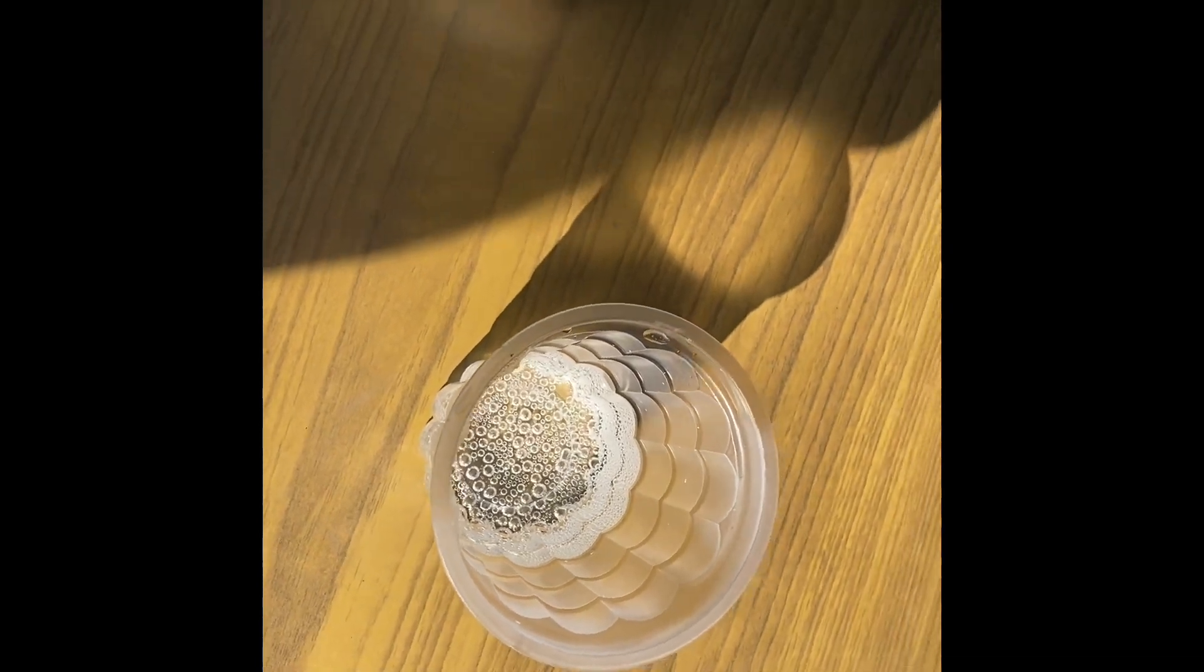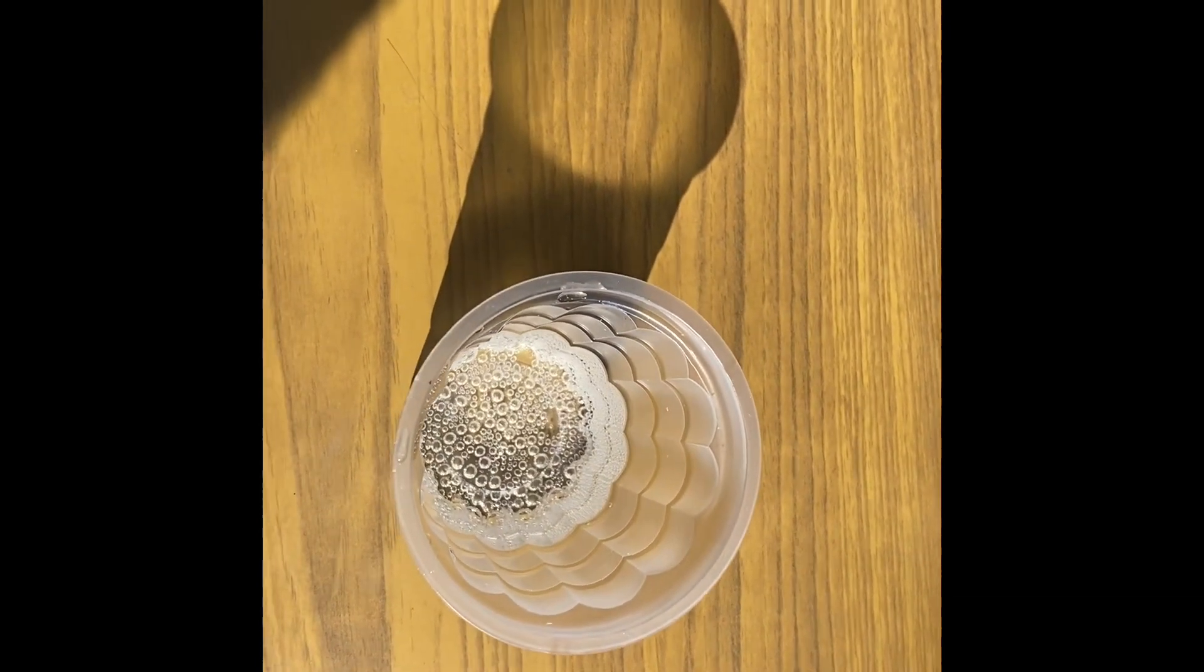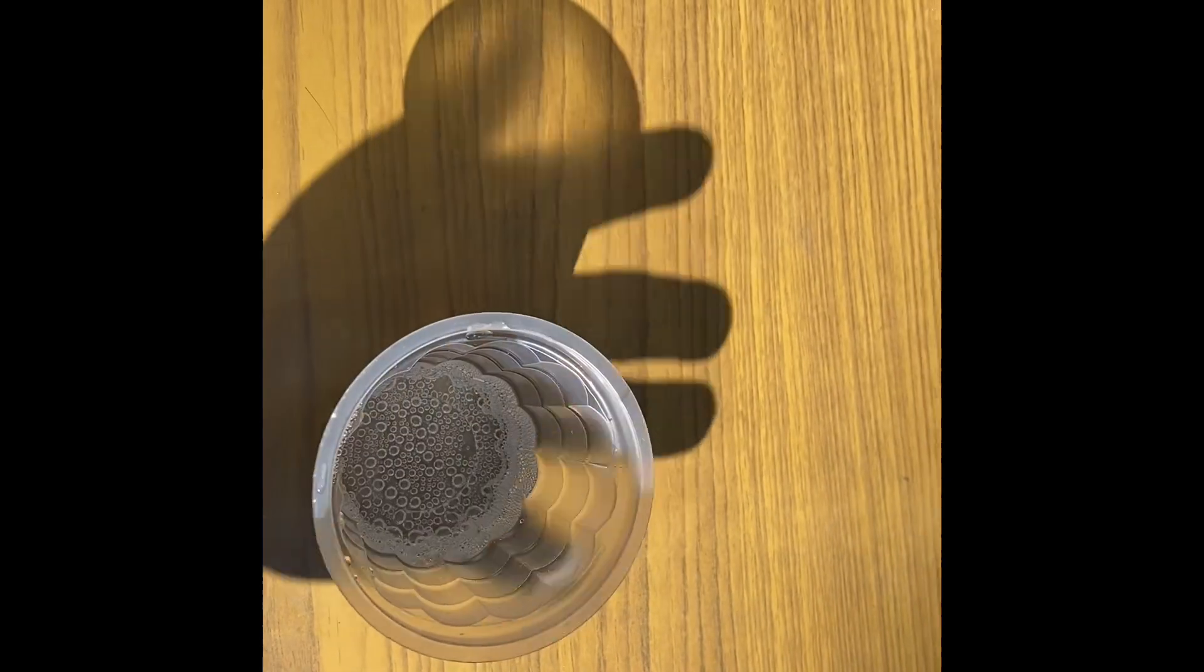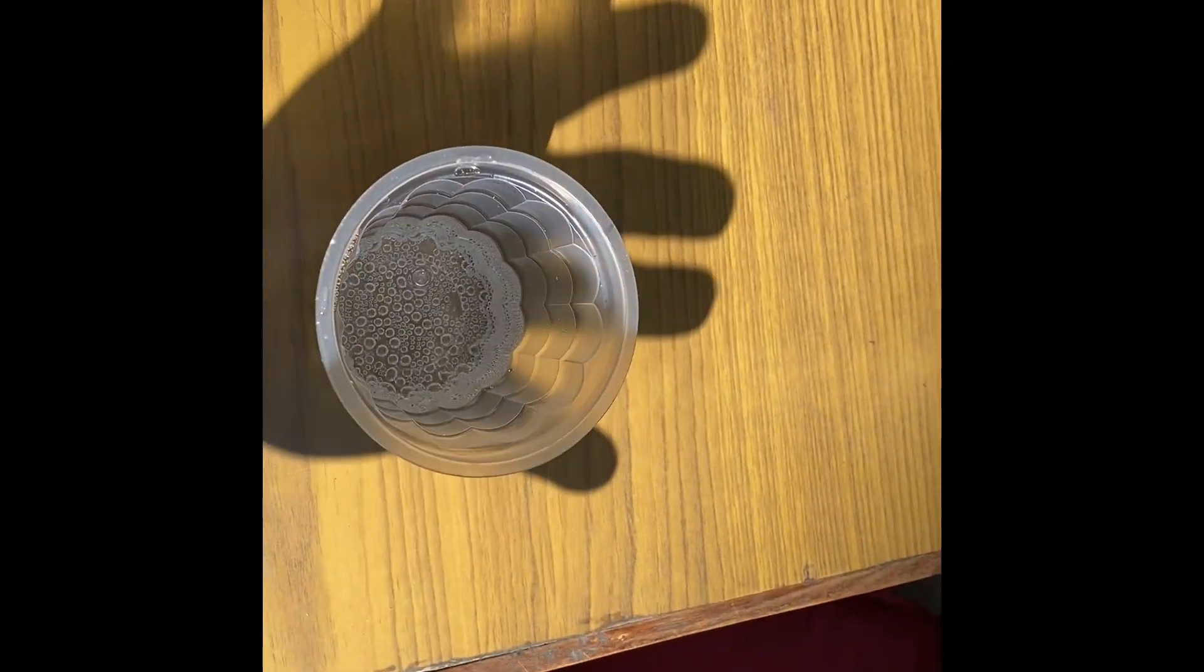Simply speaking, a shadow is an absence of light. It is not a reflection even though it is often the same shape as the object.